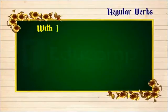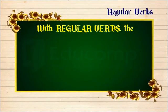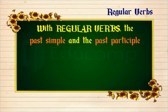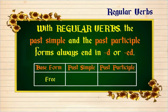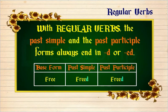With regular verbs, the past simple and the past participle forms always end in D or ED. Consider the verb 'free.' Both the past simple and past participle forms for 'free' are 'freed,' obtained by adding D at the end of the base verb 'free.' This makes 'free' a regular verb.